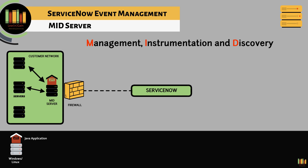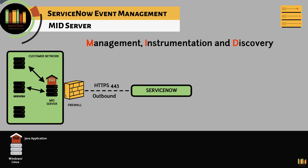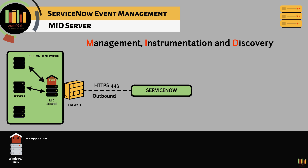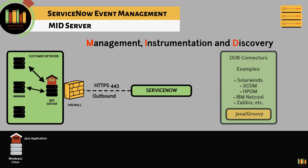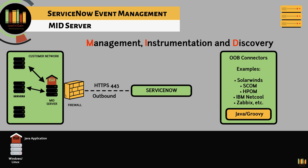More than one MID server can be installed depending on your requirement. The MID server only requires an outbound connection through port 443 to ensure your connection is secure, and initiates all its communication using SOAP on HTTPS port 443. As the communications are secure, no special firewall rules or VPNs are required. MID servers only make outbound calls to ServiceNow. ServiceNow has several connectors that used to have Groovy scripts, and the MID server connects to monitoring systems leveraging these connectors.